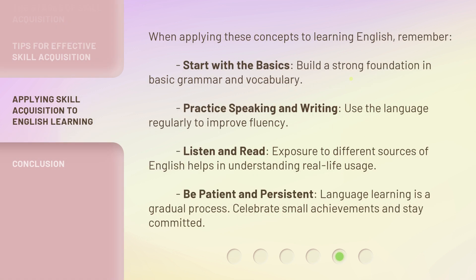When applying these concepts to learning English, remember: start with the basics and build a strong foundation in basic grammar and vocabulary. 5. Practice speaking and writing — use the language regularly to improve fluency. 6. Listen and read — exposure to different sources of English helps in understanding real-life usage. 7. Be patient and persistent — language learning is a gradual process, so celebrate small achievements and stay committed.